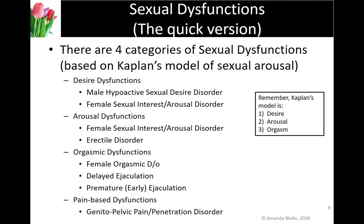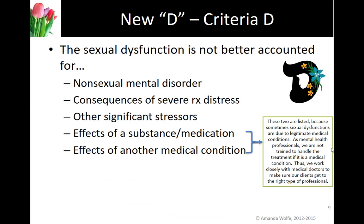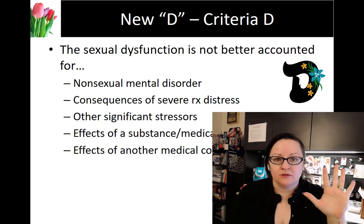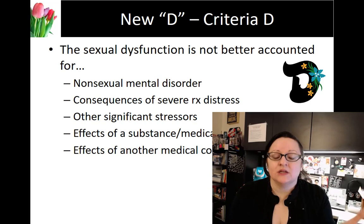The last group is pain-based dysfunction. We used to have two pain-based dysfunctions, which still exist in the ICD for health diagnoses, but for a psychological diagnosis the only one we have now is genitopelvic pain/penetration disorder. When thinking about diagnosis of dysfunctions, it's also important to understand Criteria D — the rule-outs — because both the medical and psychological communities look at sexual dysfunctions.